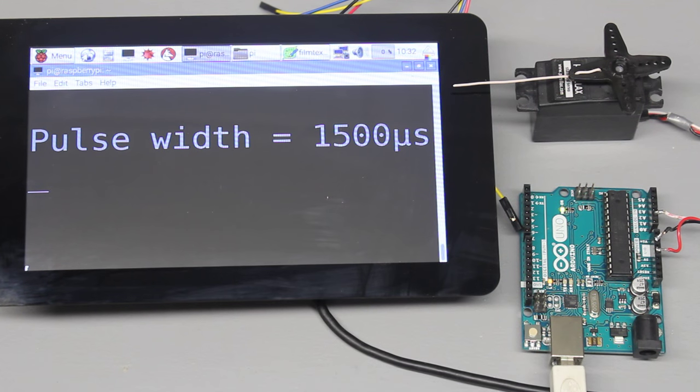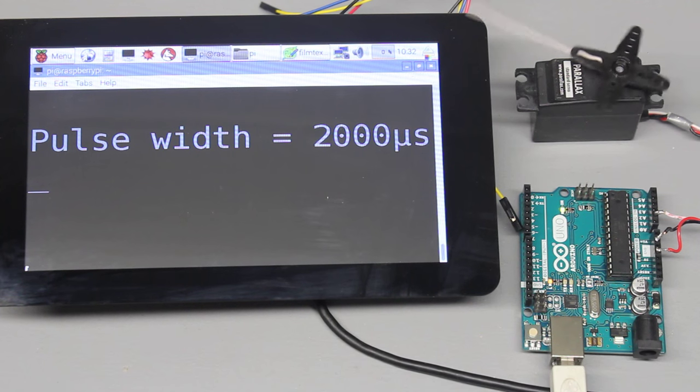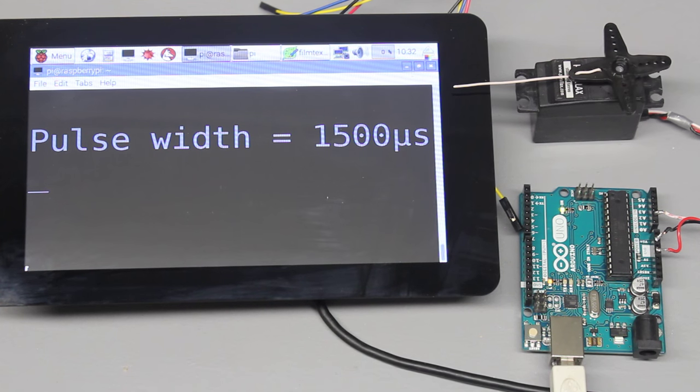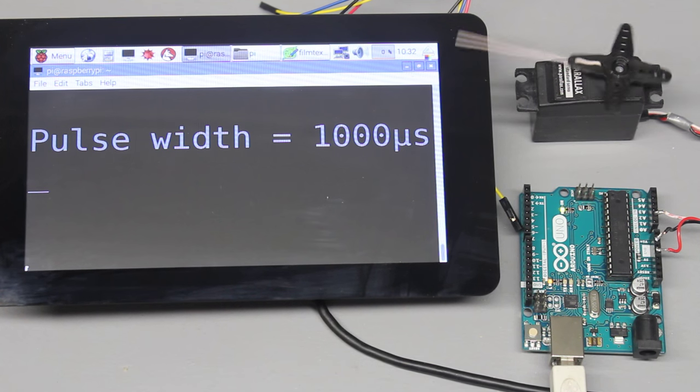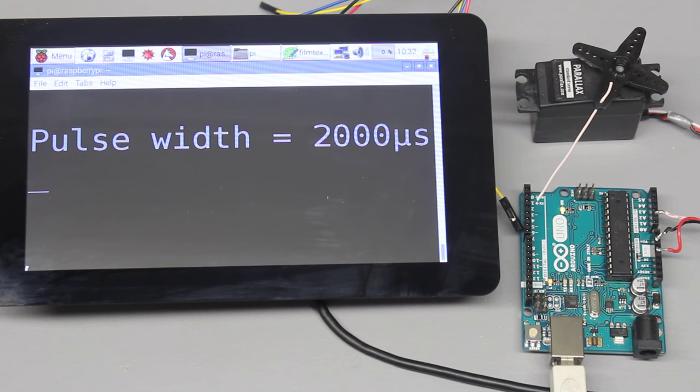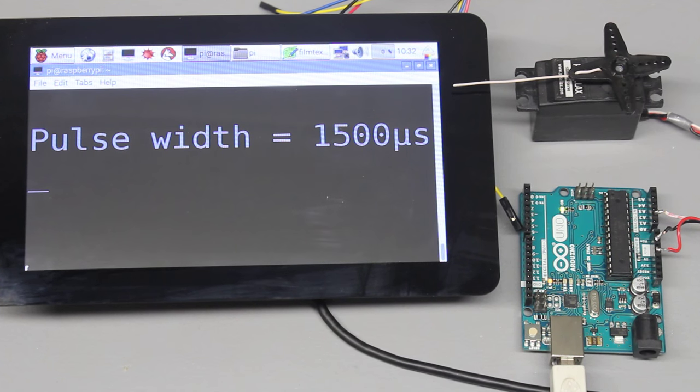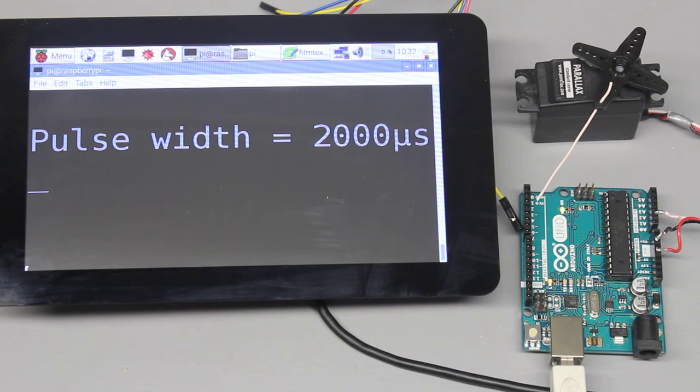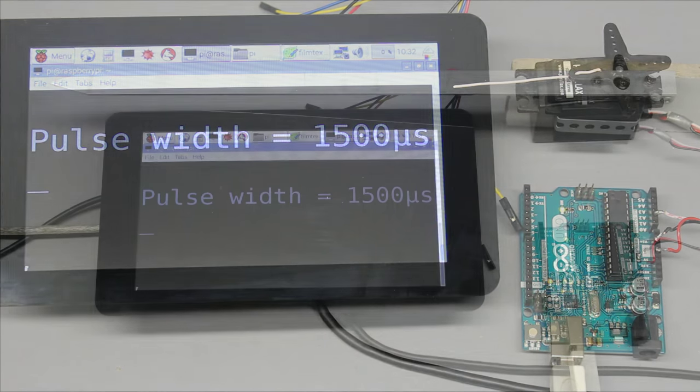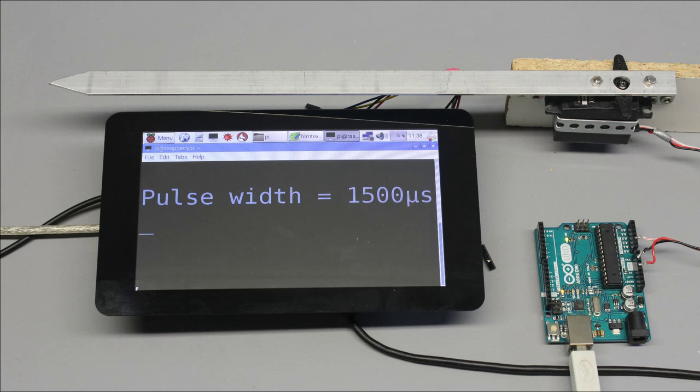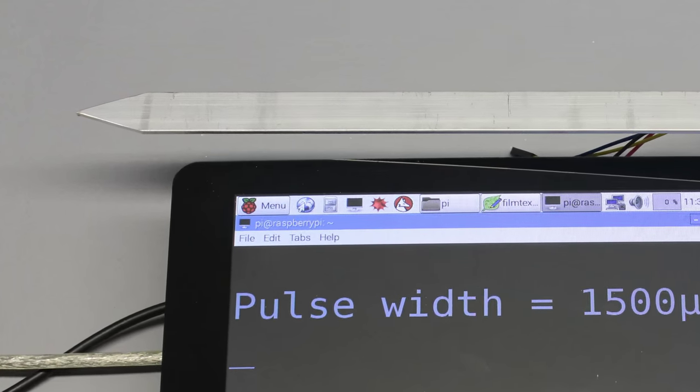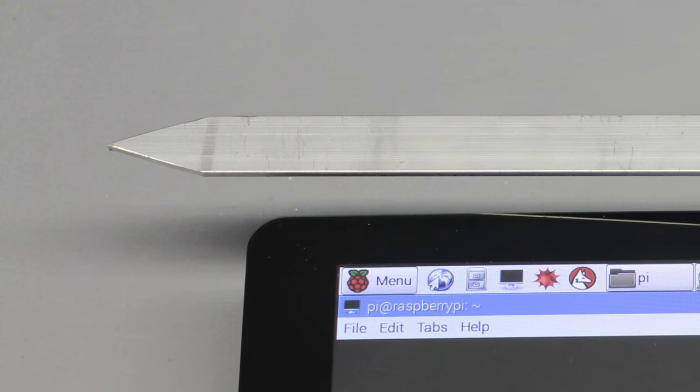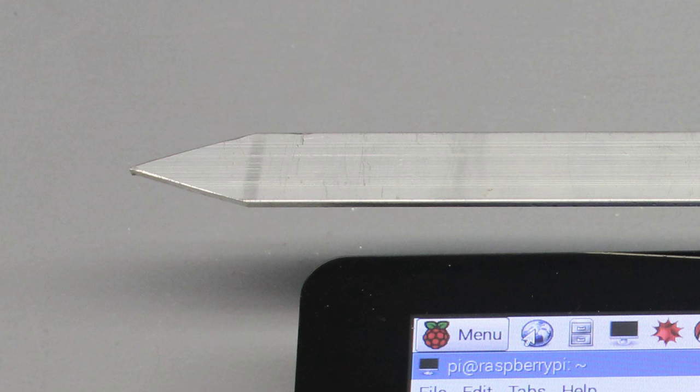The pulse width is usually between 1 and 2ms and the software can alter the signal in microsecond steps. The pulse width at the center position is 1.5ms, thus 1500 microseconds. A 30cm aluminum bar is mounted on the servo horn and the center position is marked by the tip at the end of the lever.